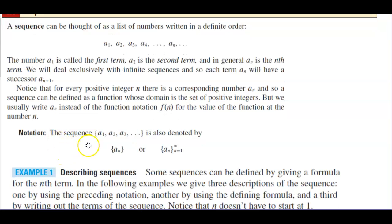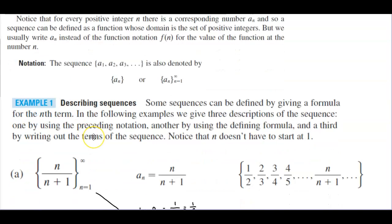The notation for the sequence — the set {a subscript 1, a subscript 2, a subscript 3, ...} — is also denoted by the set of a subscript n, or the set of a subscript n where n equals 1 going to infinity. In example one we're describing sequences. Some sequences can be defined by giving a formula for the nth term. We give three descriptions: one using the preceding notation, another using the defining formula, and the third by writing out the terms. Note that n does not have to start at 1.